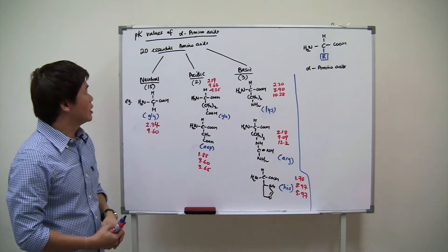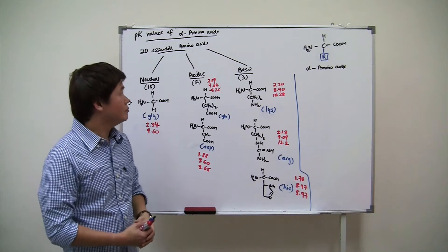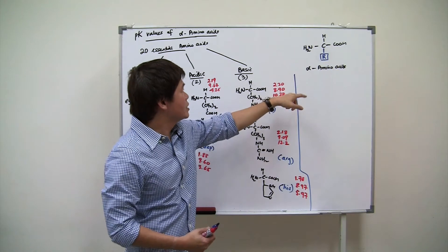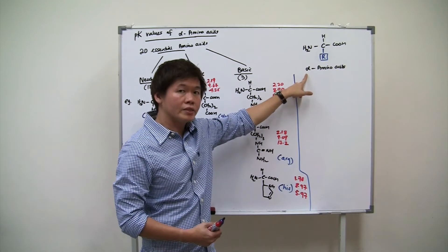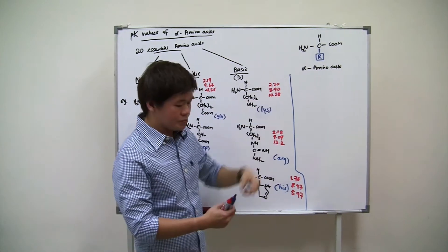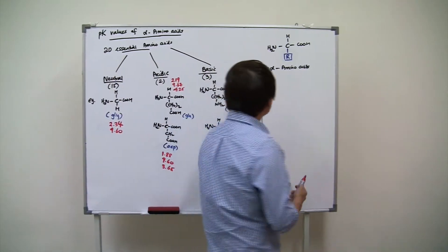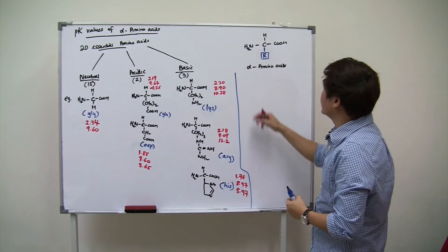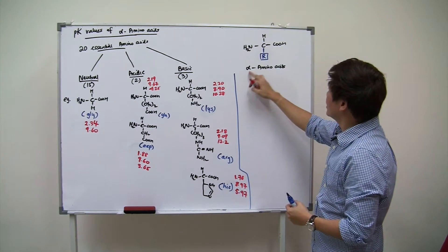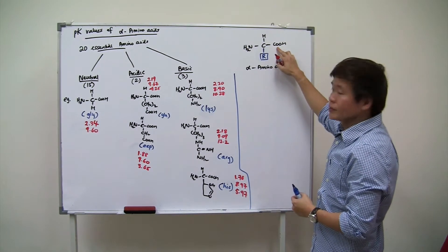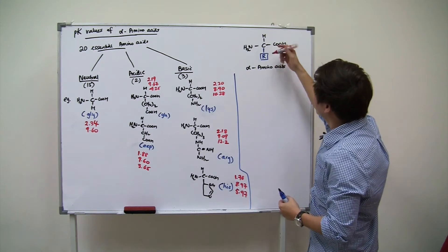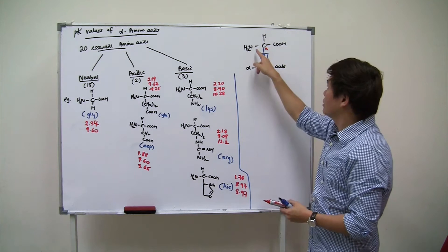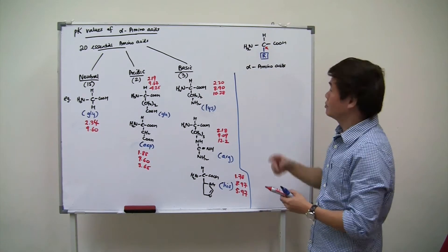Before we start, let's take a look at amino acids in our syllabus. The amino acids that are important for us are called the alpha amino acids. They're called alpha amino acids because alpha is a Greek letter for A, and it refers to the carbon that is after the acid carbon. Excluding the acid carbon, the first carbon after that is called the alpha carbon. If there's another carbon after that, it becomes a beta or gamma carbon.